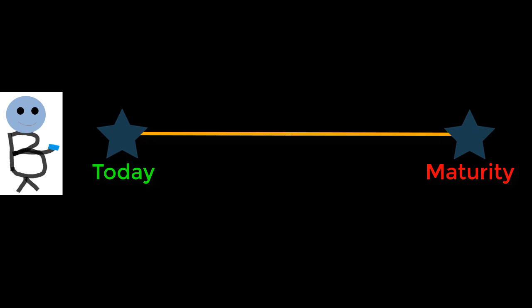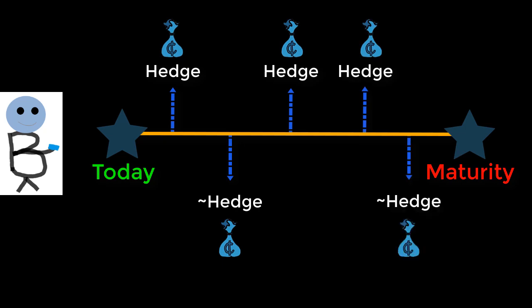In reinforcement learning, the agent learns by trial and error to maximize the cumulative reward by choosing when to hedge during the life of the option.